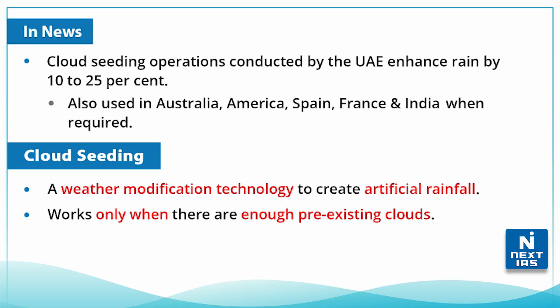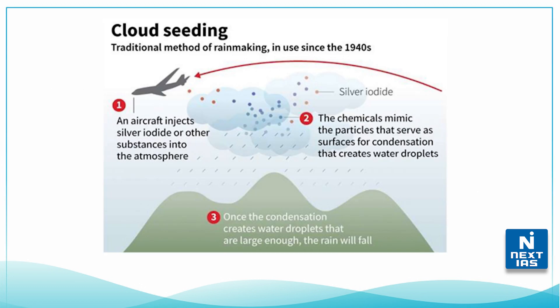This method has also been used in Australia, America, Spain, France, and even India when required. Cloud seeding is a weather modification technology used to create artificial rainfall.